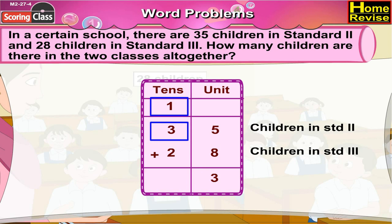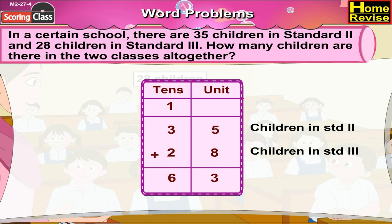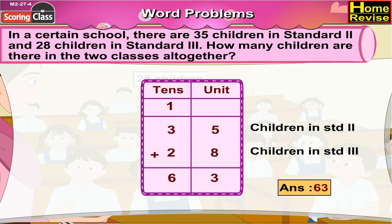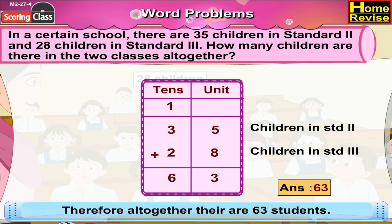In the tens column, it is 1 ten plus 3 tens plus 2 tens. That is 6 tens. So it is 6 tens 3 units, or 63. Altogether there are 63 students.